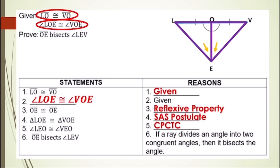For our last statement, line segment OE bisects angle LEV. The reason is: if a ray divides an angle into two congruent angles, then it bisects the angle. The activity proves that line segment OE bisects angle LEV. Let's recall that an angle bisector is a segment, ray, or line that divides an angle into two congruent angles. Now, let's apply this to find measures of angles of a triangle.